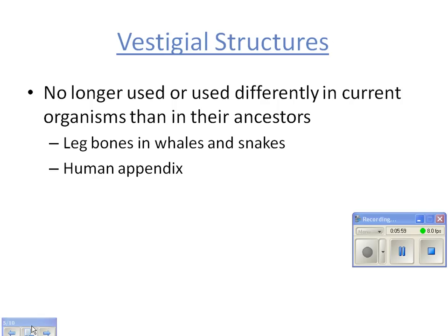Vestigial structures are things that are no longer used or are now used differently. The big example is leg and hip bones in whales and snakes — these animals don't have legs, but they have a hip bone that a leg should fit into. This suggests that whales and snakes share a common ancestor with something that had legs.